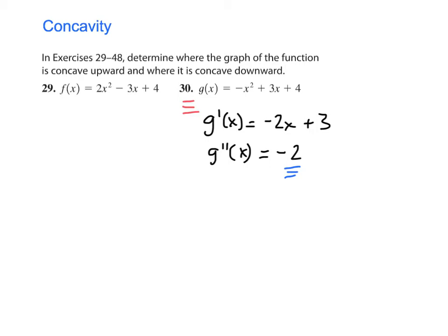So in this case, we have a polynomial, it's just a quadratic. Its domain is from negative infinity to positive infinity. And so this is concave down on that entire domain. And I would indicate that interval is negative infinity to positive infinity.